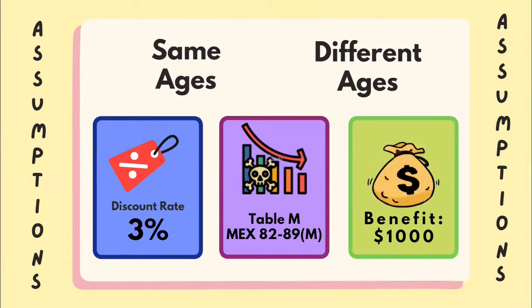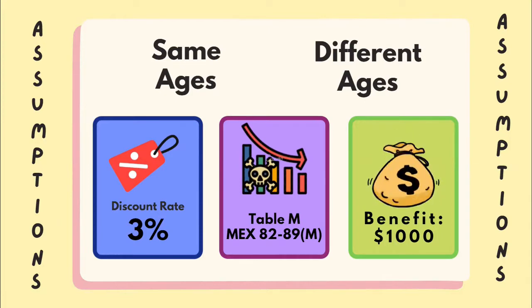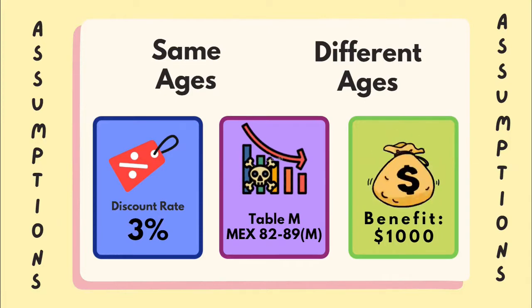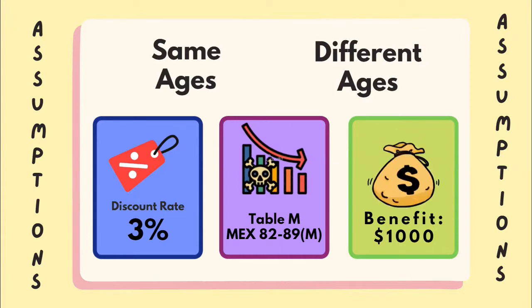In both cases, we are going to have a discount rate of 3% and a benefit of 1000, and the mortality table makes for ages 82 to 89.